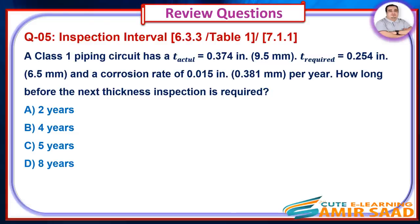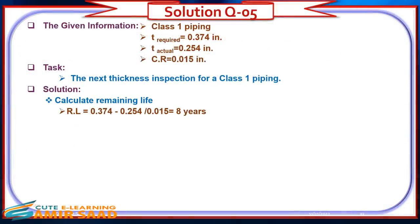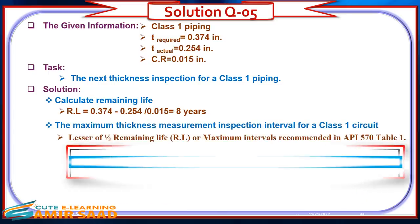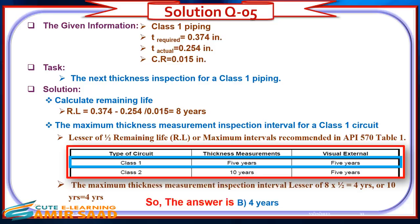Question 5: A Class 1 piping circuit has T-actual equals 0.374 inch, T-required equals 0.254 inch, and a corrosion rate of 0.015 inch per year. How long before the next thickness inspection is required? Solution: Calculate remaining life. The maximum thickness measurement inspection interval for a Class 1 circuit is the lesser of one-half remaining life or the maximum from API 570 Table 1. The answer is B: 4 years.